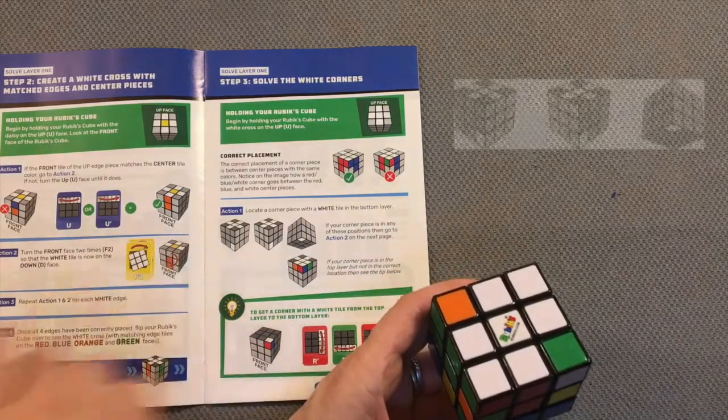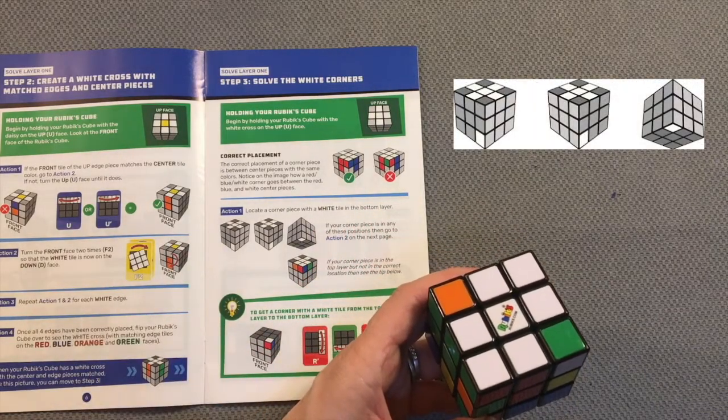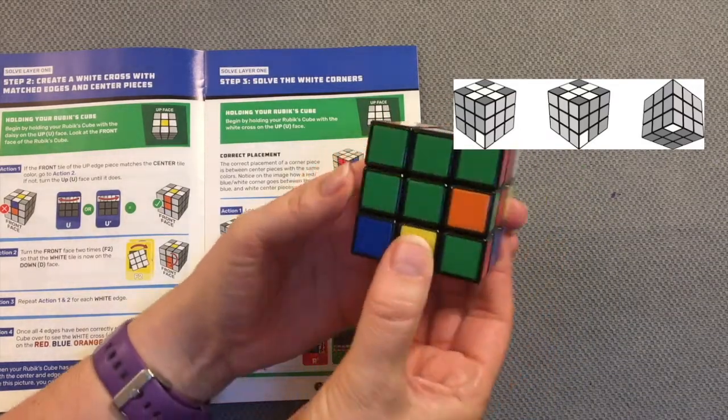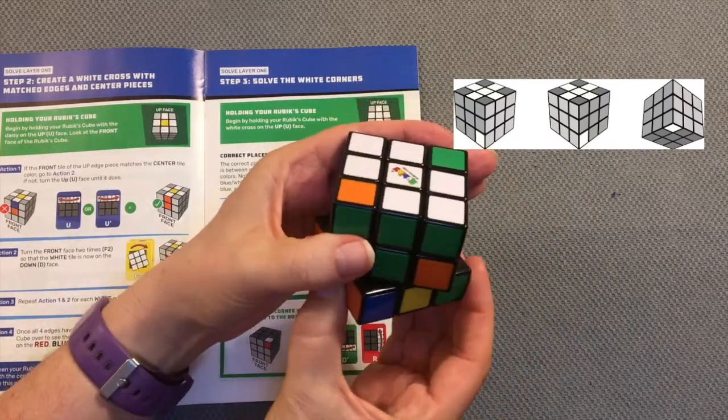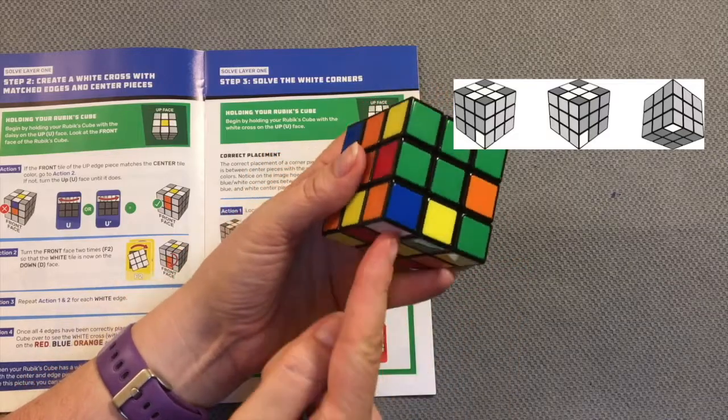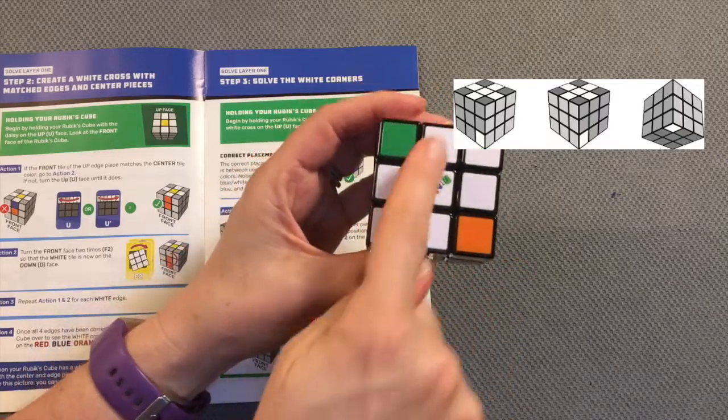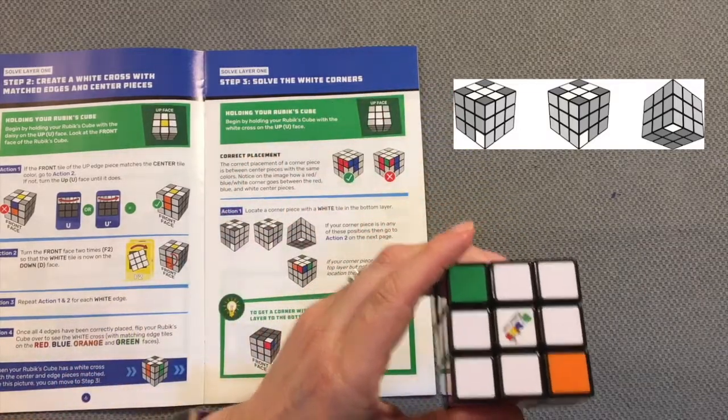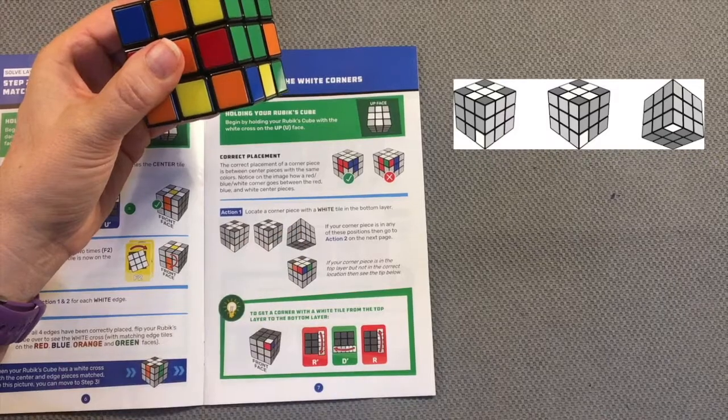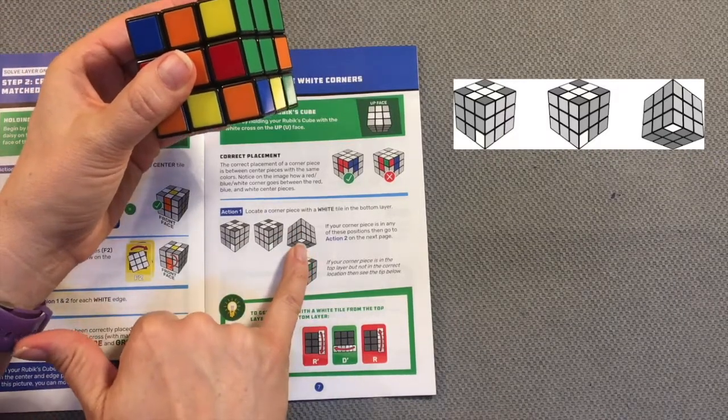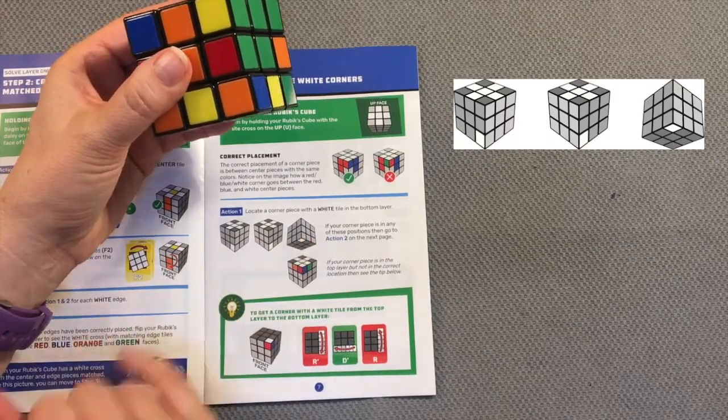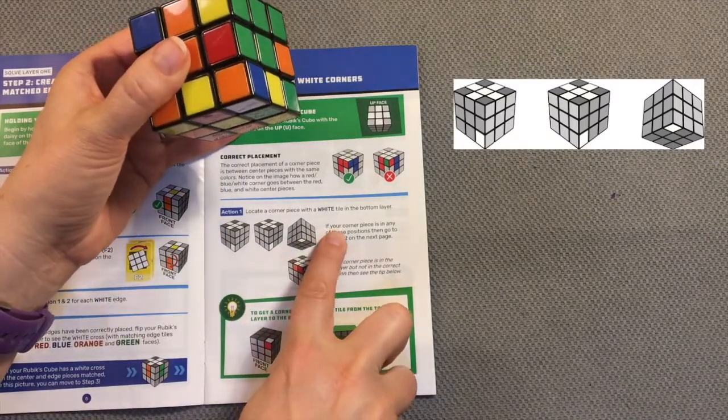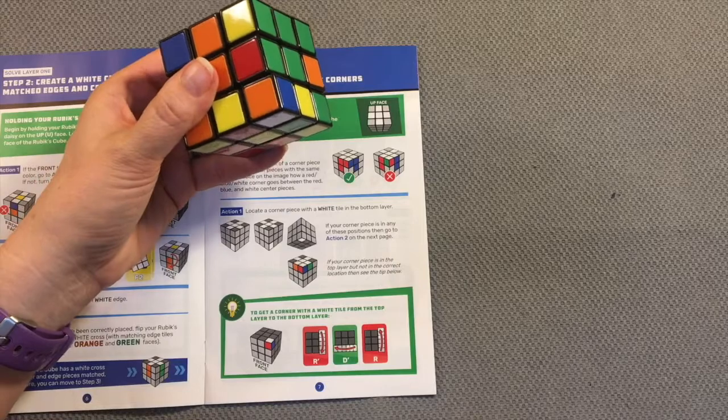Action 1 says to locate a corner piece with a white tile in the bottom layer. I see a white tile here. Remember, this is my bottom layer; it happens to be facing down. My up face is my white cross, and here's that white tile in the corner. There are three options for the location of that white tile, and I notice that mine is this one all the way on the right because the tile is on the down face. It says if your corner piece is in any of these positions, then go to action 2 on the next page.